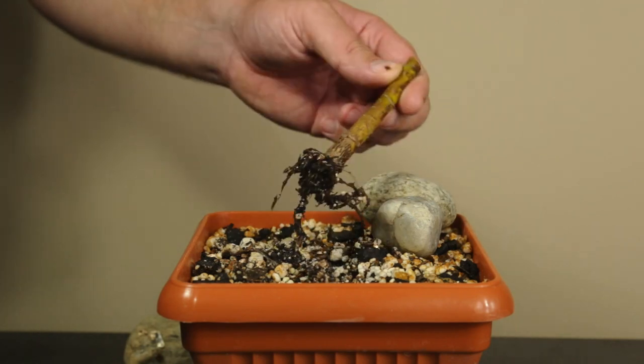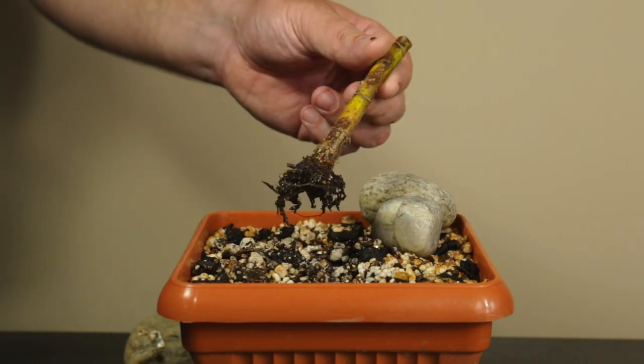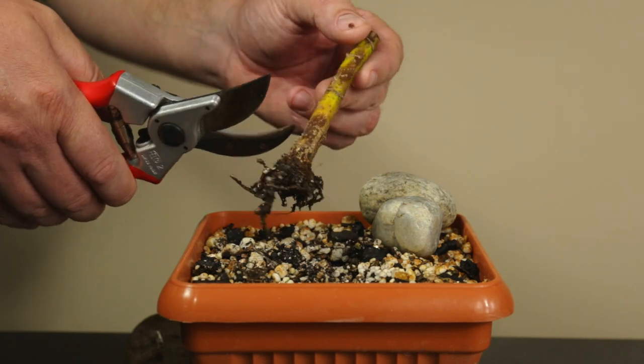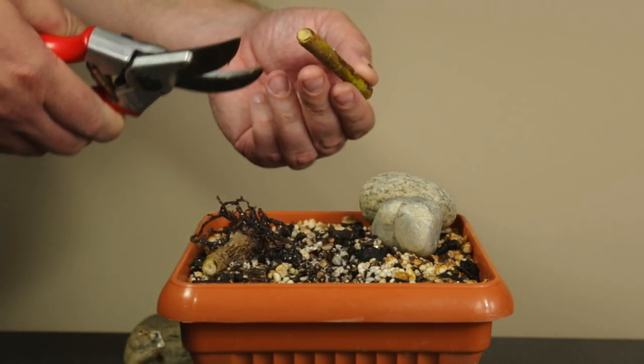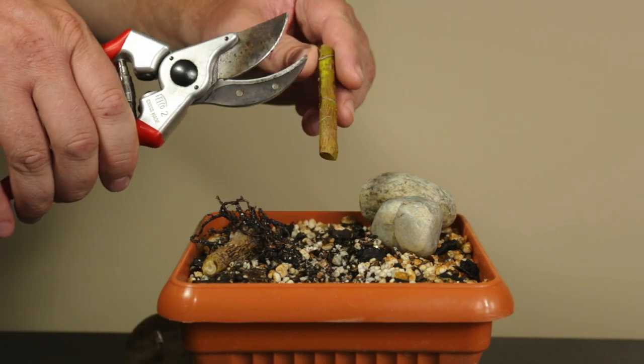As you can see, the roots were completely dead. It seems that the hard pruning I applied to the roots and stem was too much for this Schefflera. Overwatering and overestimating its actual health state may have also played a role in its demise.